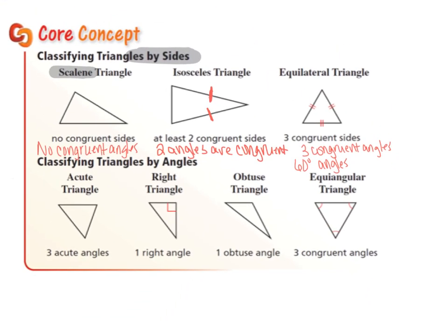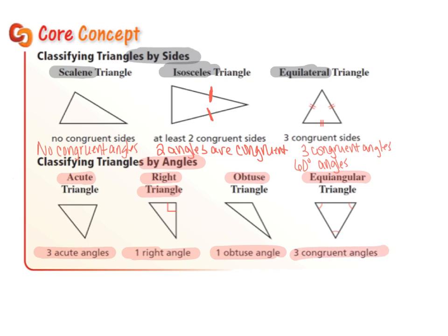If we're classifying by sides, we can call them scalene, isosceles, and equilateral. If we are classifying by angles, we have four ways. If they are acute, all three angles in the triangle are acute. If they are a right triangle, there is exactly one right angle. If there is an obtuse triangle, there is exactly one obtuse angle. And equiangular — equi means equal, angular meaning angle — equal angles, so all three are congruent angles, just like the equilateral, they're also all 60 degrees.